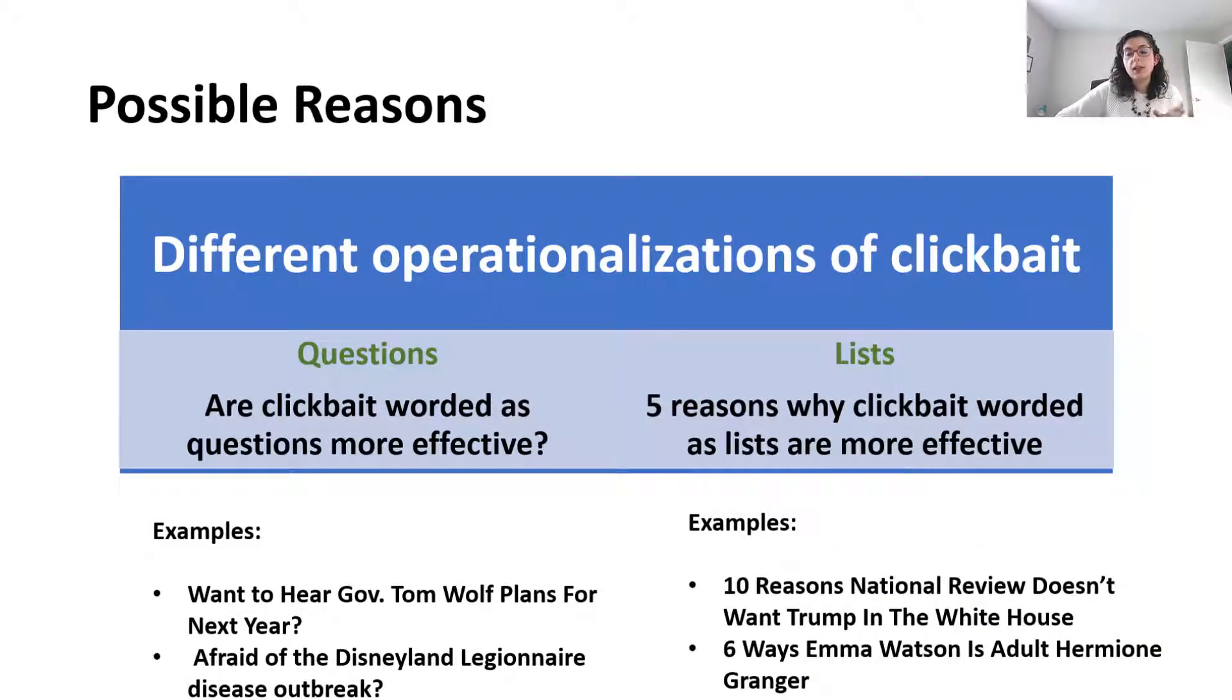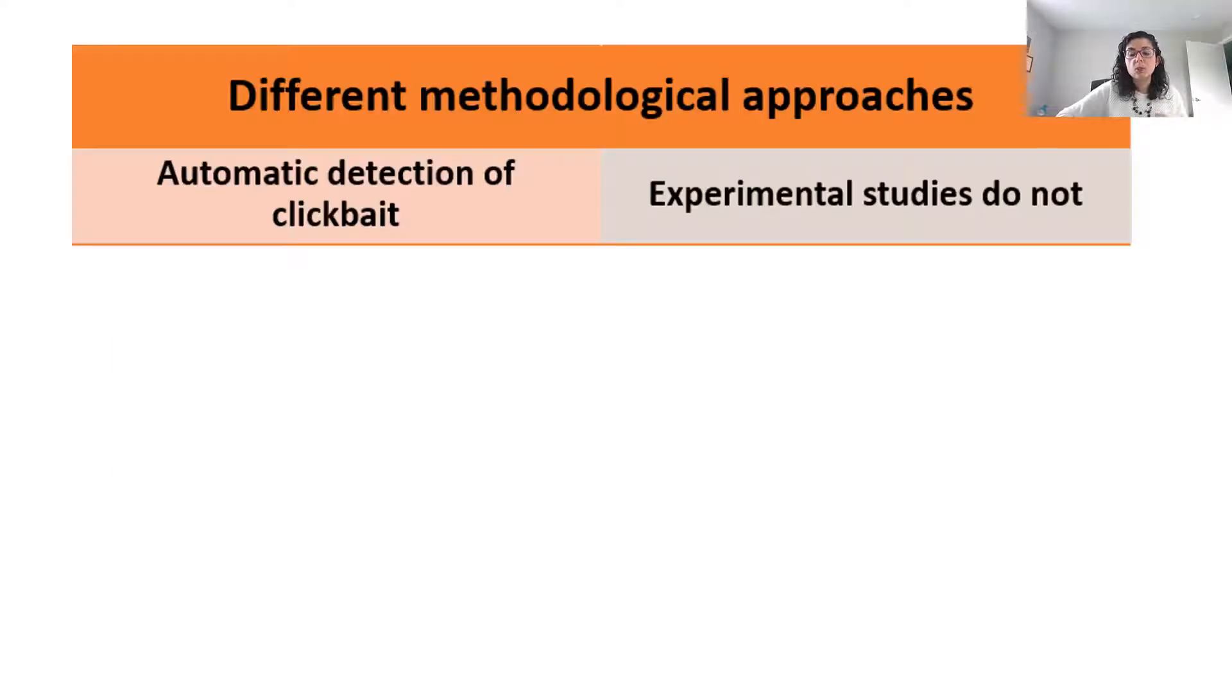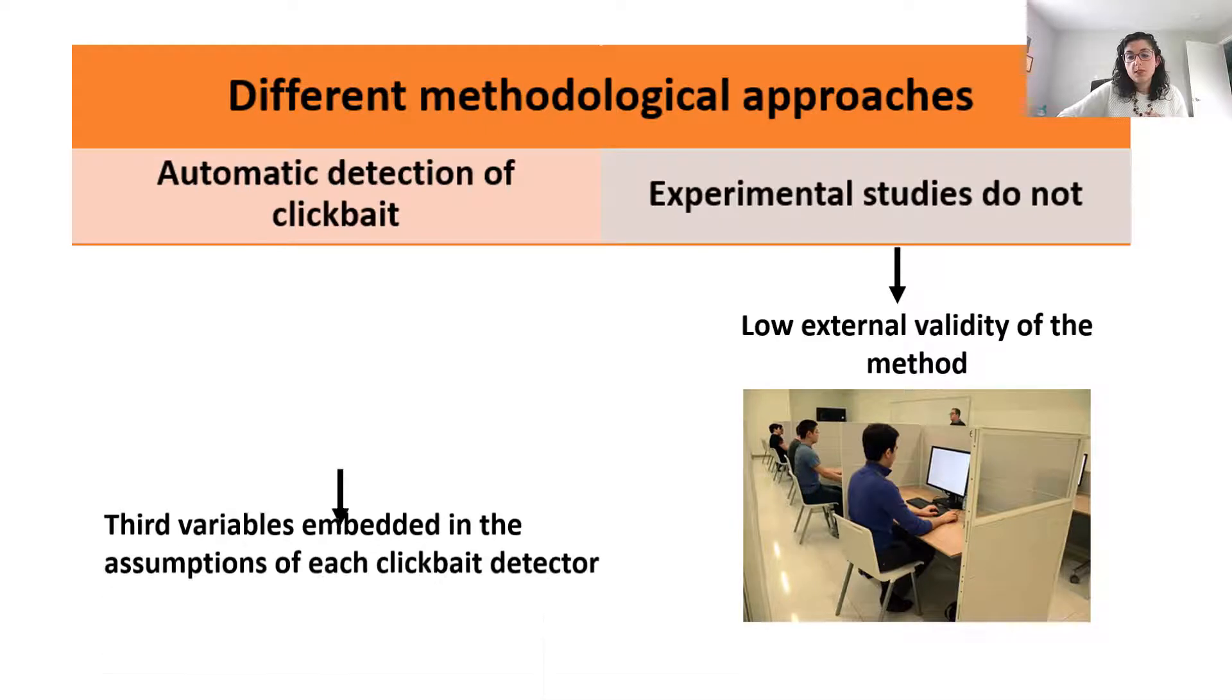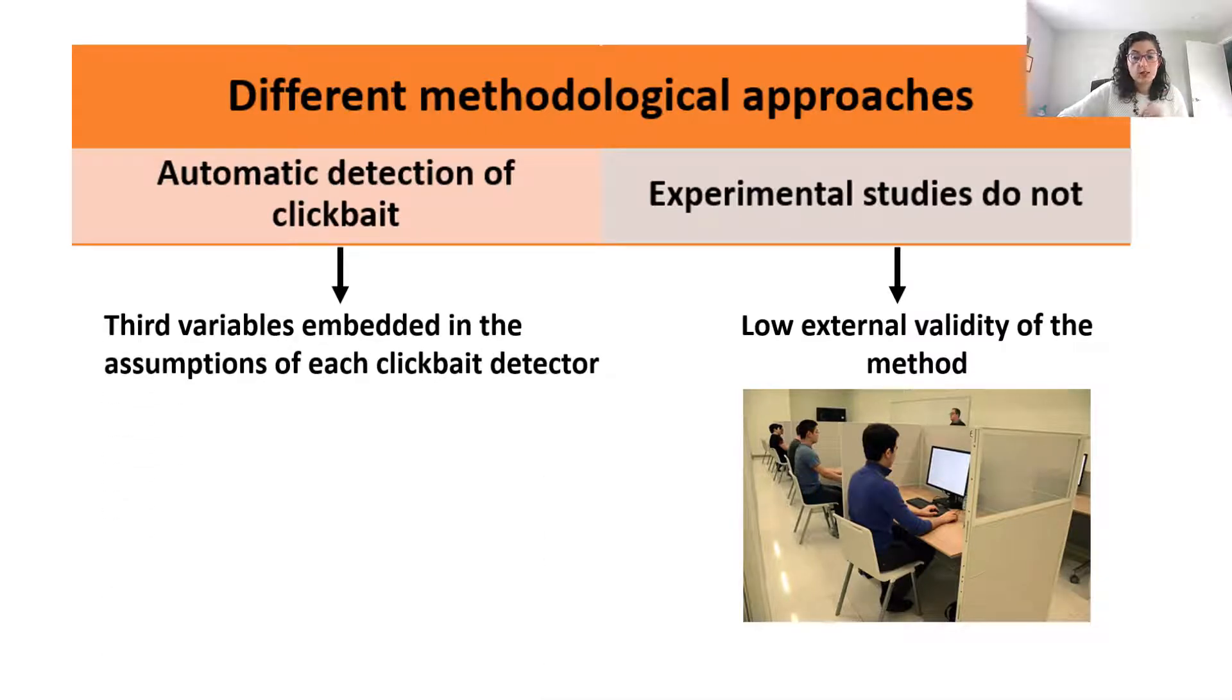So it is possible that some clickbait characteristics are more effective than others. Yet a second possibility has to do with the different methodological approaches. It is possible that the null results from experimental studies is due to the low external validity of the method. But it is also possible that the engagement captured through computational methods do not represent engagement with clickbait per se, but third variables embedded in the assumptions of each clickbait detector.